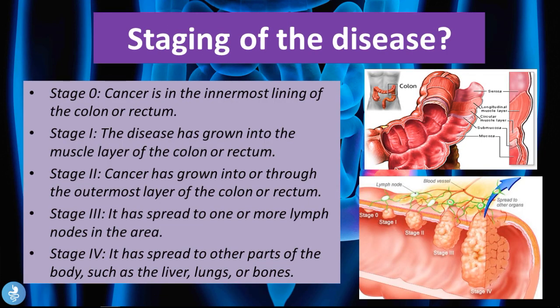Before discussing staging, it's important to review the layers of the colorectal wall. From innermost to outermost: the mucosal layer, the submucosal layer, the muscular layer (comprising circular and longitudinal layers), and the serosal layer — four main layers in total.